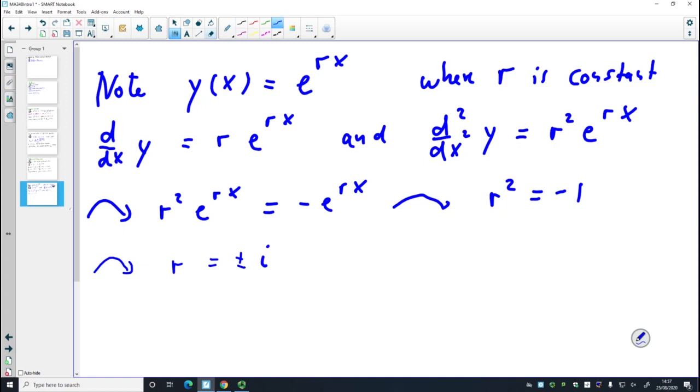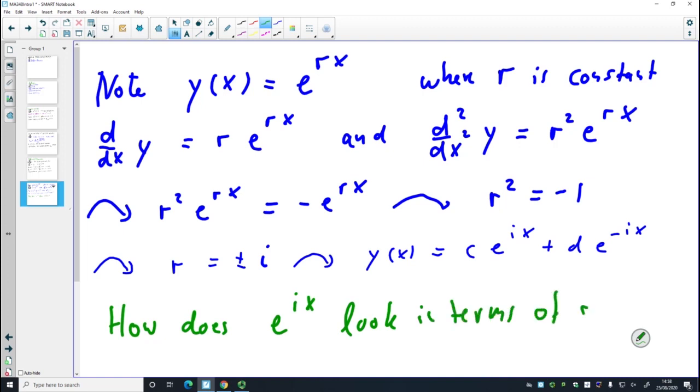Then I can write down my general solution. The general solution would be, with some new constants, c·e^(ix), and some other constant d, e^(-ix). So what do I have now? Right now I have the same differential equation with two solutions. They must be related. So how can I relate them? One way of doing this is impose initial conditions.